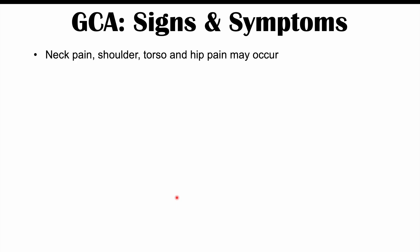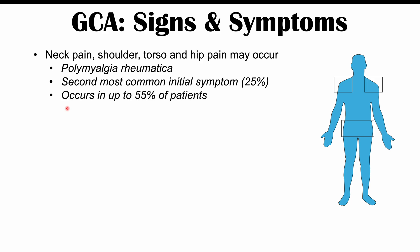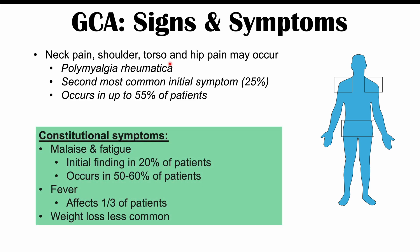Other important symptoms include neck pain, shoulder, torso, and hip pain. For those with a medical background, pain in these sites may trigger a thought of polymyalgia rheumatica. This is actually the second most common initial symptom, occurring in 25% of patients. Up to 30% of PMR patients can have giant cell arteritis, and up to 55% of GCA patients can have polymyalgia rheumatica symptoms — a very important overlap.